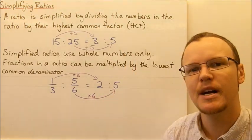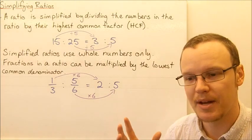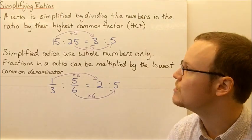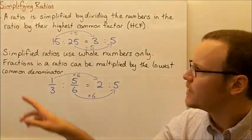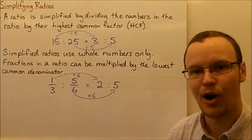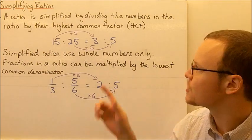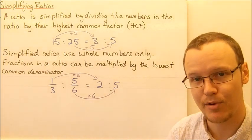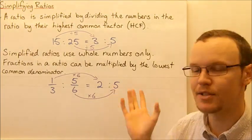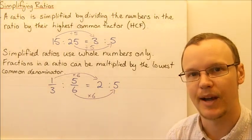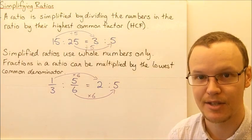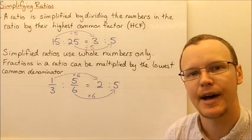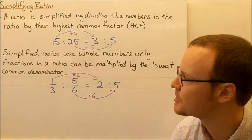If we've got it in simplest form where all the numbers are as low as they can possibly be, it's going to be a lot easier for us to work with. Simplified ratios use whole numbers only. So if in a simplified ratio you get a decimal number or a fraction, what you've done is divided by a number that's too high — a number bigger than the highest common factor. So you need to go back and check that you've got the highest common factor of the two numbers.